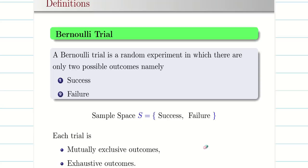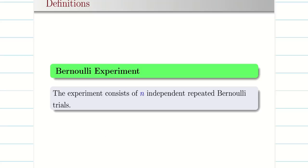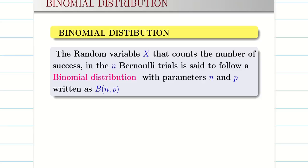These are the basics we need to know. What is a Bernoulli experiment? A Bernoulli experiment contains n independent repeated Bernoulli trials. You are repeating Bernoulli trials n times and all trials are independent — that is called a Bernoulli experiment.